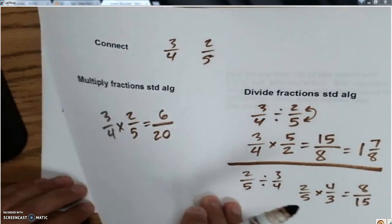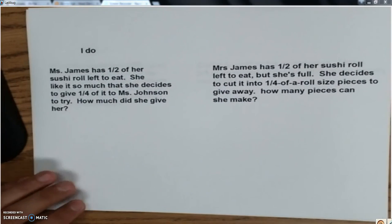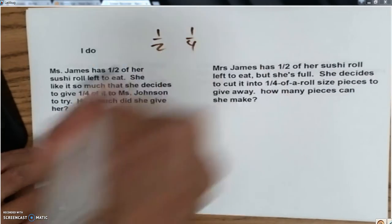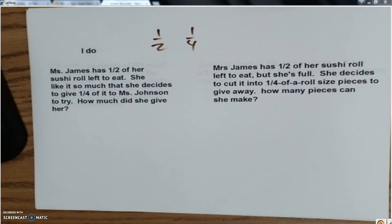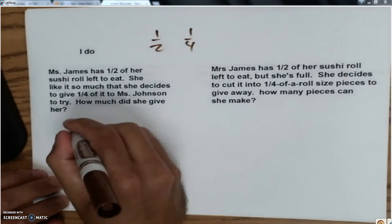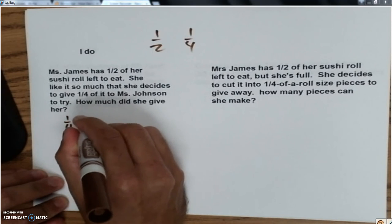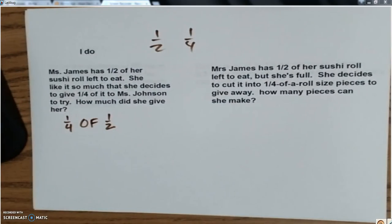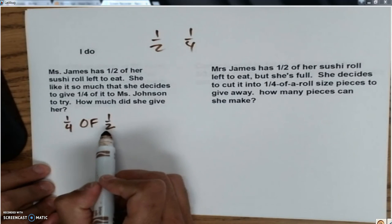Alright. So remember, our goal here is to figure out whether to multiply or divide. So let's do an I do with the fractions 1/2 and 1/4. So first one, Ms. James has 1/2 of her sushi roll left to eat. She likes it so much that she decides to give 1/4 of it to Ms. Johnson to try. How much did she give her? So what I've got here, she's going to give Ms. Johnson 1/4 of her 1/2 of sushi. She's going to take a fourth of the half.